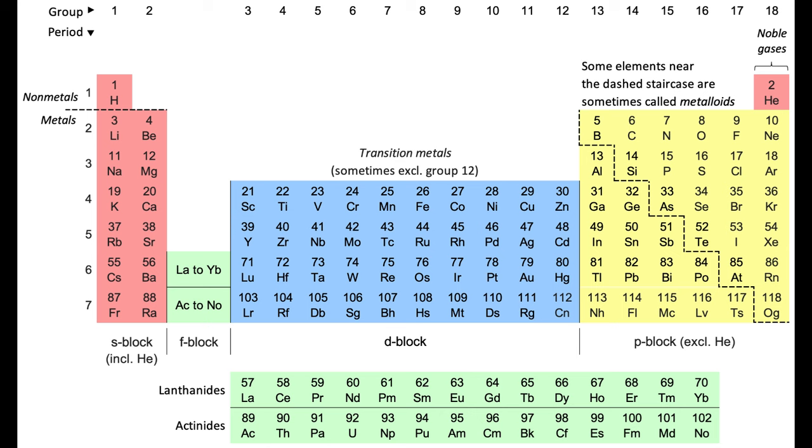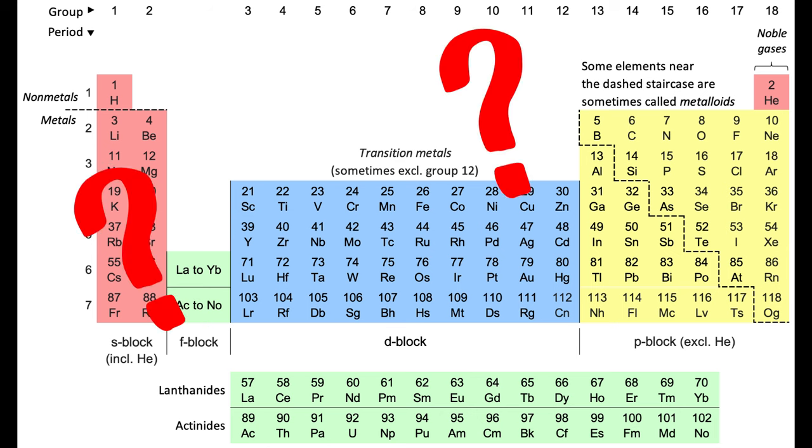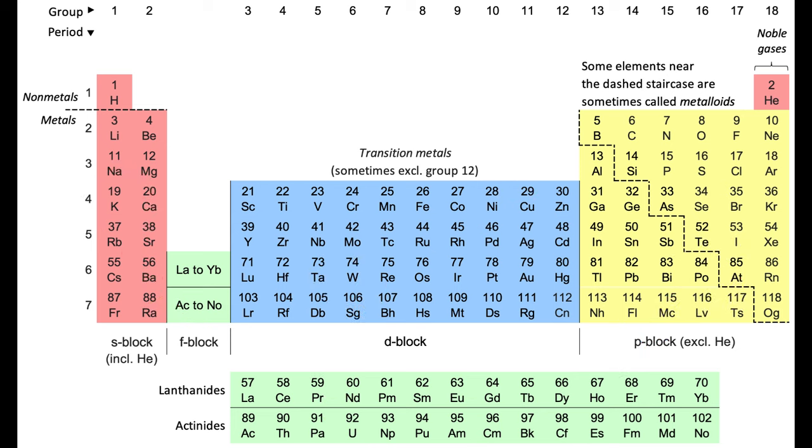But, apart from that, why is the periodic table so allegedly good at classifying the elements? Well, you see, along with them being ordered by atomic number, the number of protons, all the elements in a group, in a vertical column, share the same number of valence electrons, and thus, similar properties.